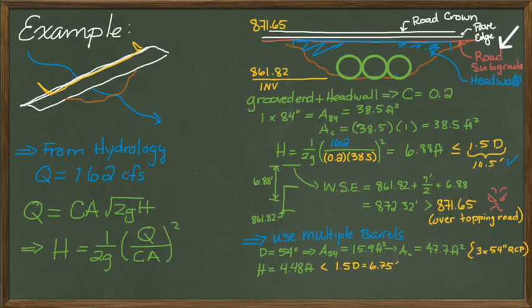So using that calculation again, we solve H to be 4.48 feet, which is less than 1.5 D, so we're not ponding excessively. What is the water surface elevation?